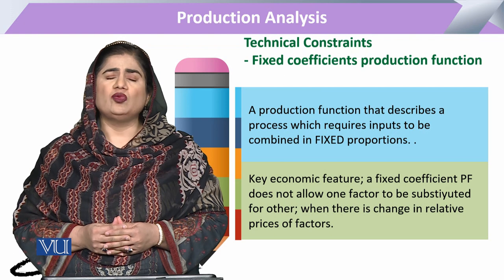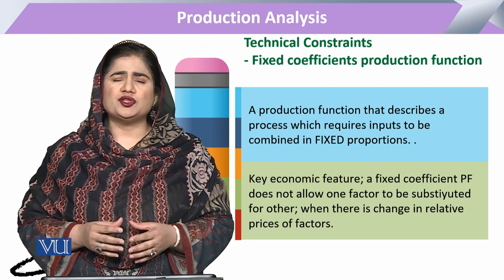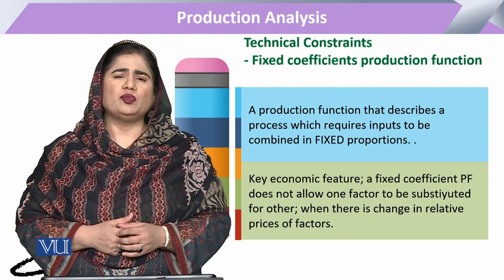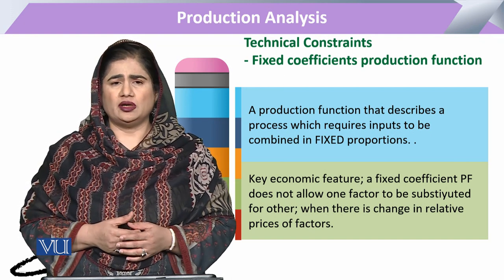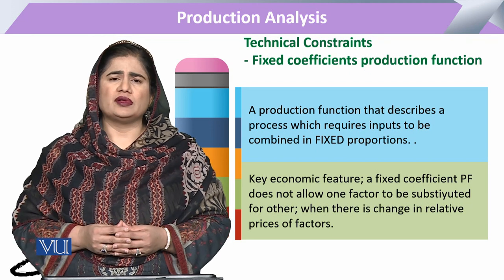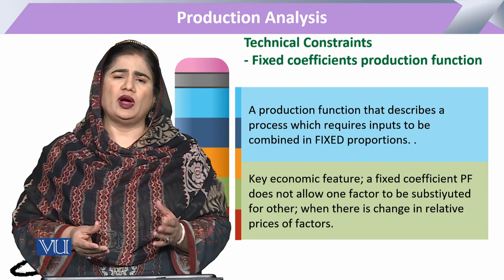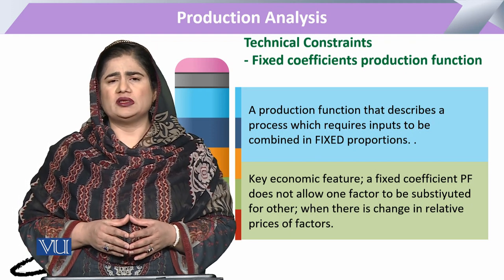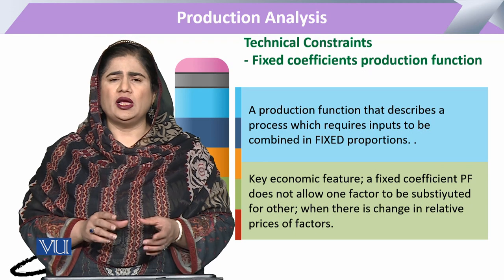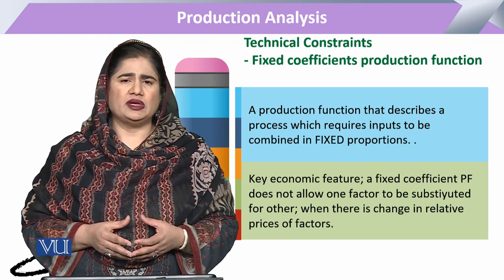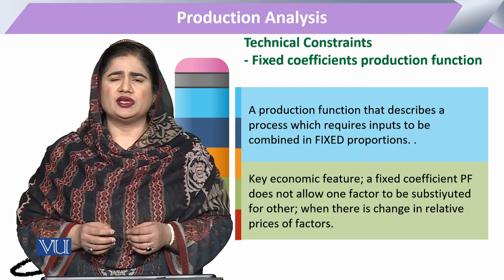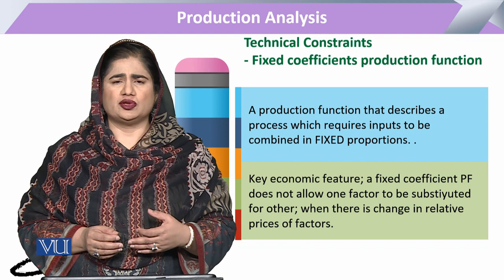When we say fixed coefficient, it means that output will be produced by a fixed proportion of certain inputs. This production function requires that inputs will not be substituted with each other, but will be utilized at a fixed level. For example, one unit of labor plus three units of capital — whatever the scaling situation, that minimal fixed combination has to remain throughout the production process.